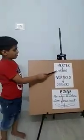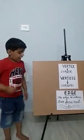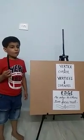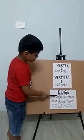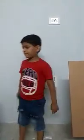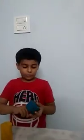Vertices means corners. The first solid shape is a cube. It has 6 flat faces, 12 edges, and 8 vertices.